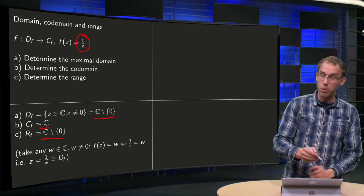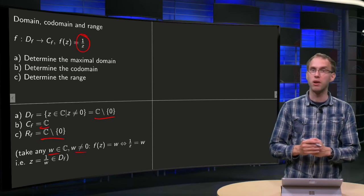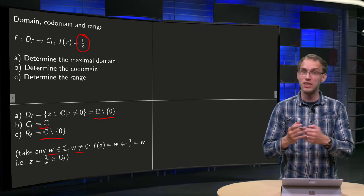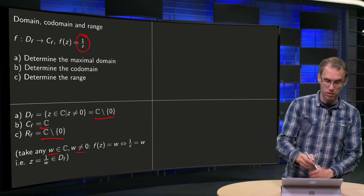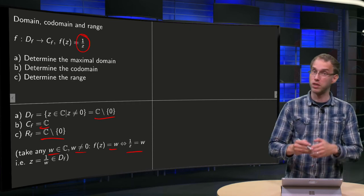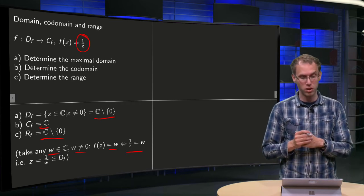So why is that? Take any w in C, not equal to 0, and we wonder can we reach this value w? So we set f(z) equals w, so f(z) equals 1 over z, so 1 over z equals w.